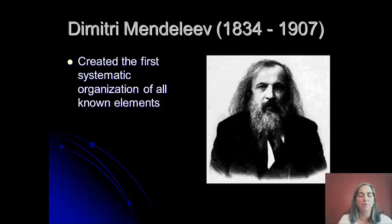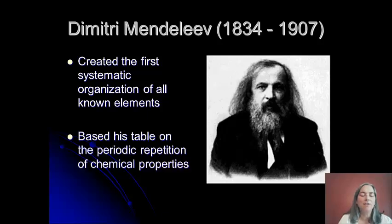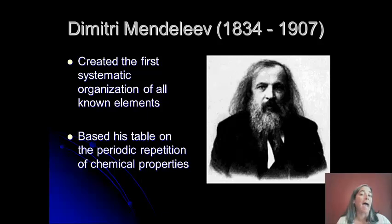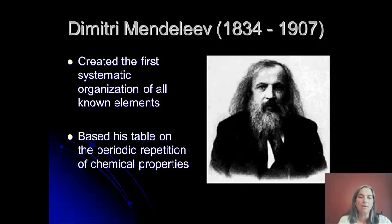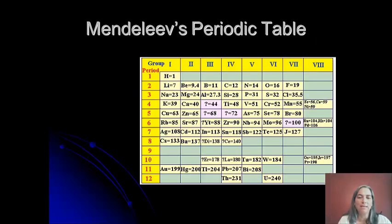He put them into a little table, and he did that initially by using the repetition of chemical properties. When we say periodic — when we talk about the periodic table or things that happen periodically — we're talking about things that happen on some regular basis. And that's what he discovered.